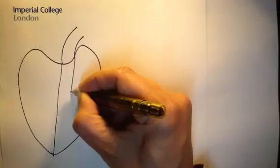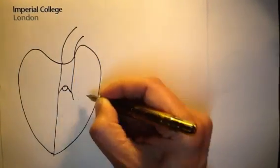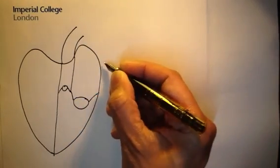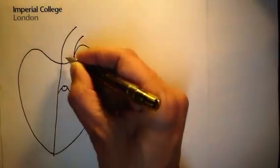And the aortic valve is here, and the mitral valve is here. And of course, blood comes into the atrium, into the ventricle, and then out through the aorta.